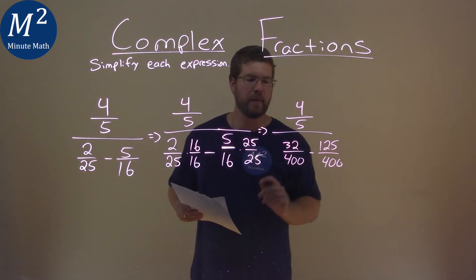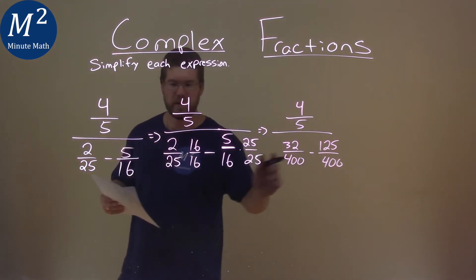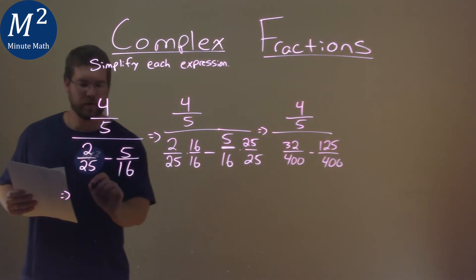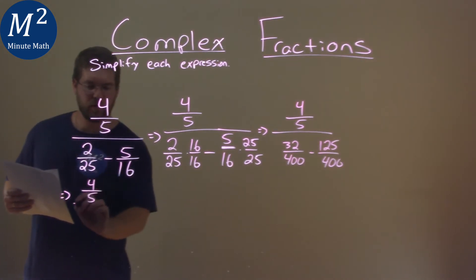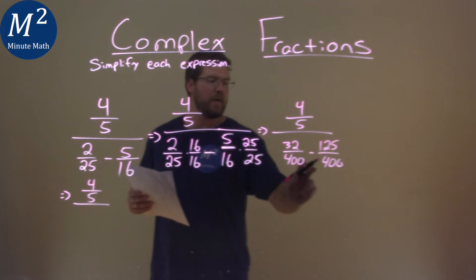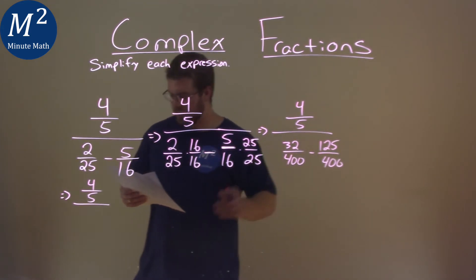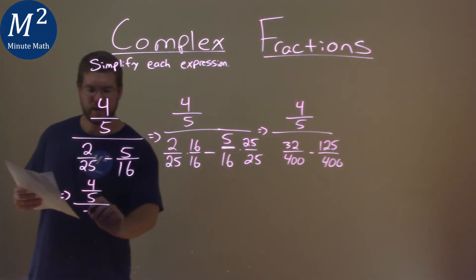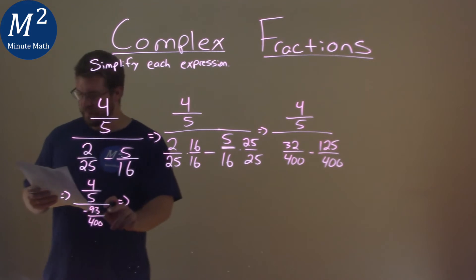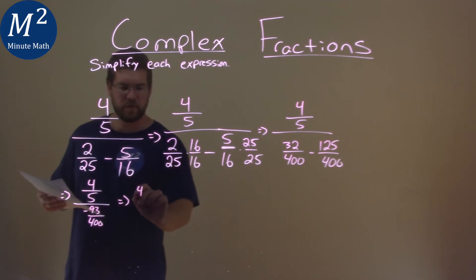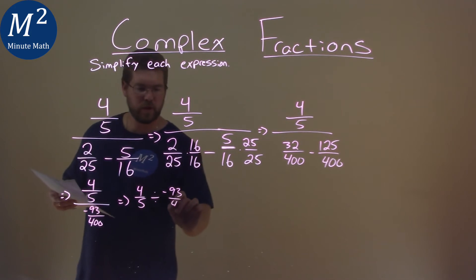We now can combine that denominator, so I'll do that over here. Okay, so we have that 4 fifths over, we had the same time, 4 times 400, so 32 minus a 125 is a negative 93 over 400. Now, the way I like to write this, with this big division here, I say, okay, 4 fifths divided by negative 93 over 400.